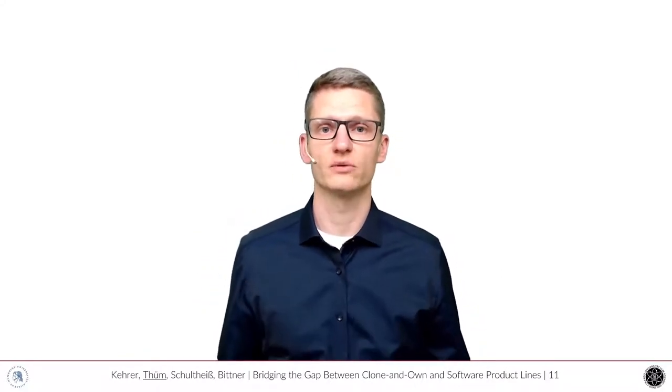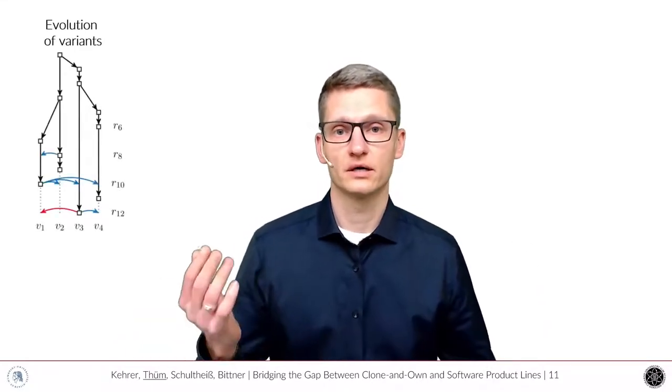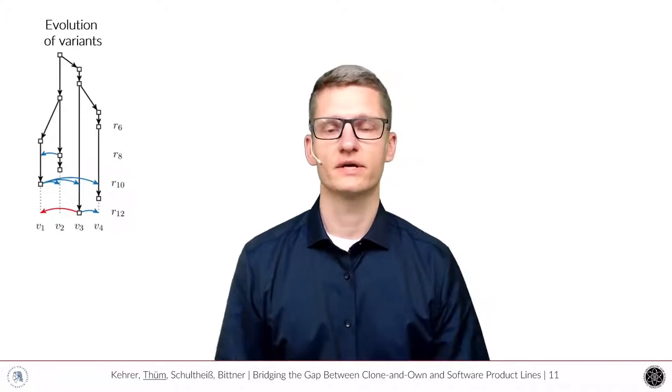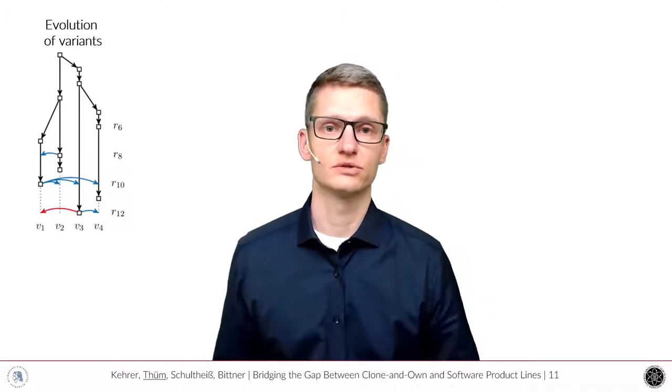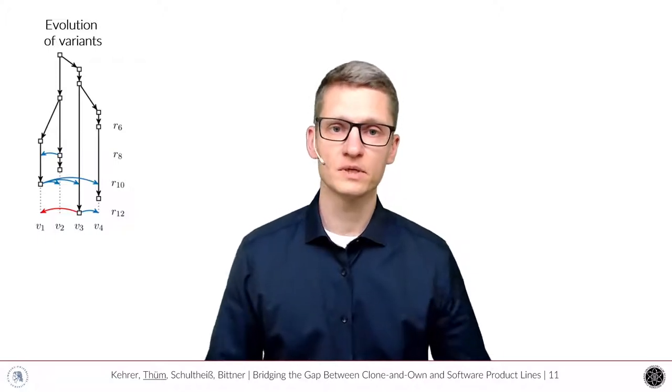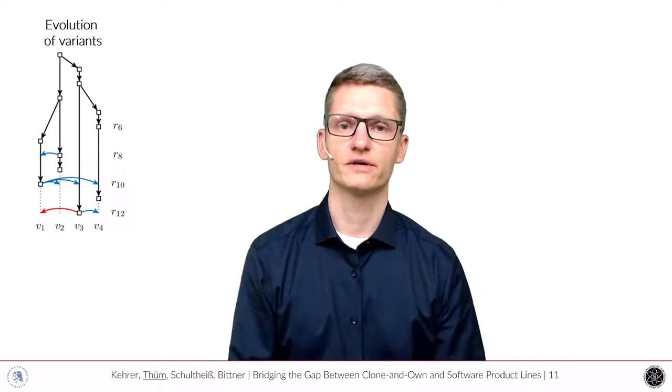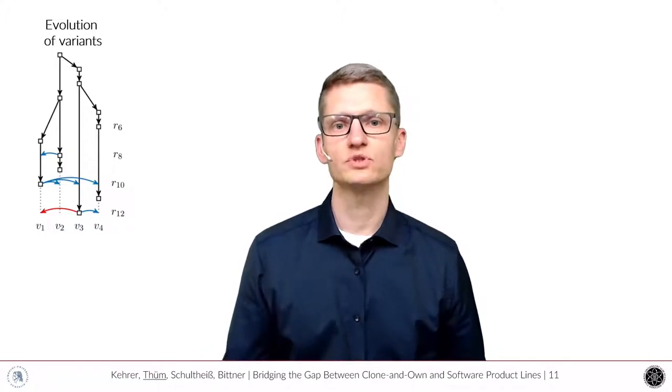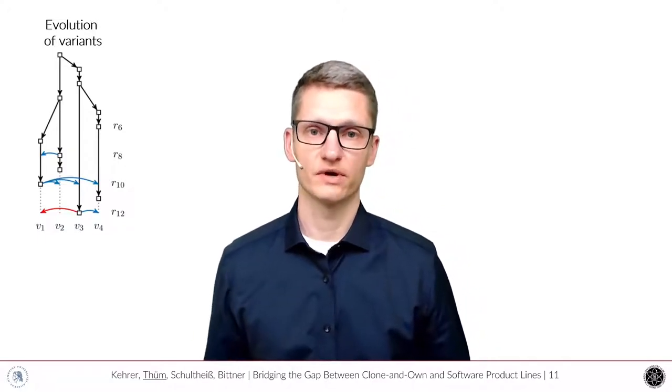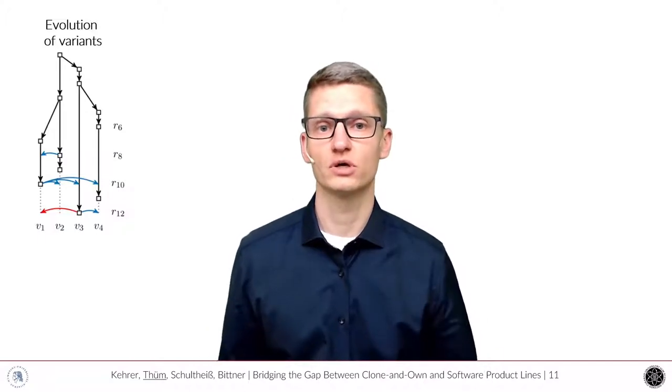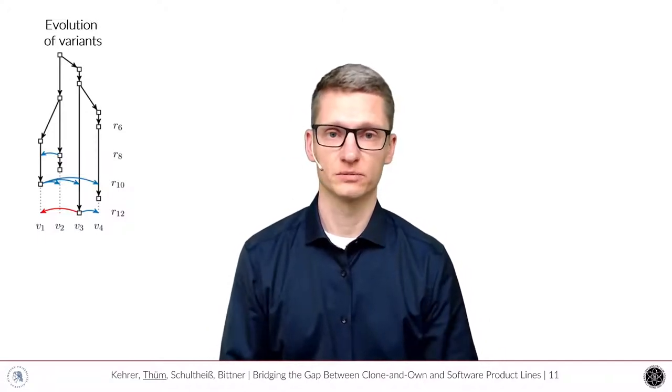So overall, VariantSync tries to improve the situation of clone-and-own development. What does it mean? In clone-and-own development, developers start by copying an existing variant and editing it to their purposes. Over time, there's an individual development of all of the variants. And with VariantSync, we aim to propagate changes between those variants from one variant, one clone to another one as automatically as possible.